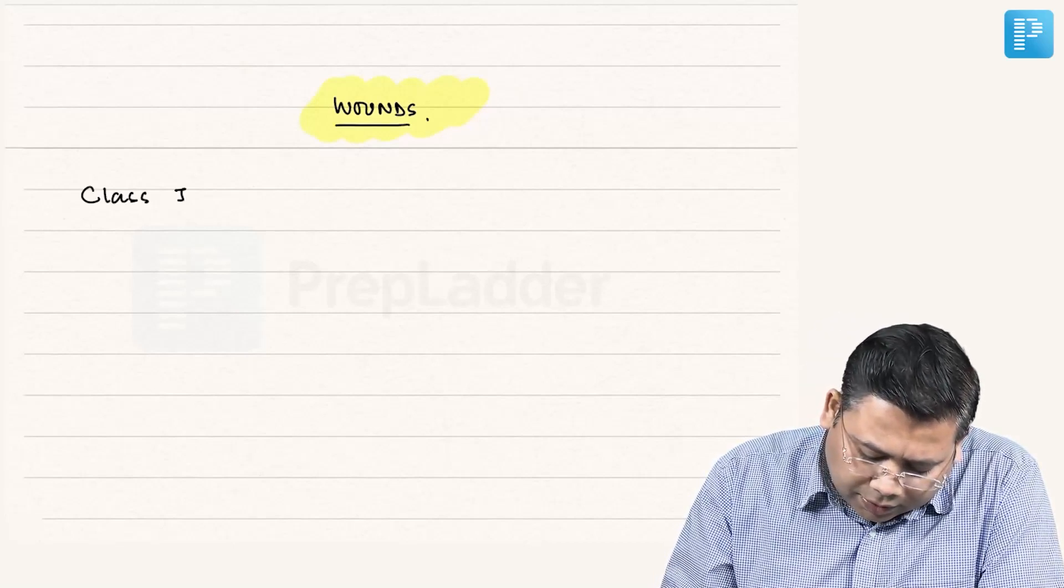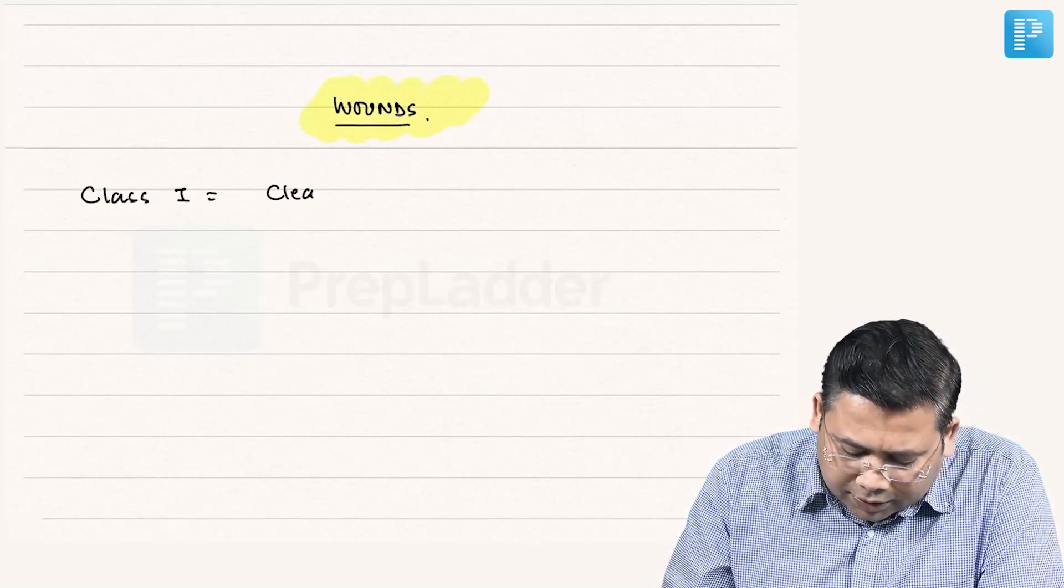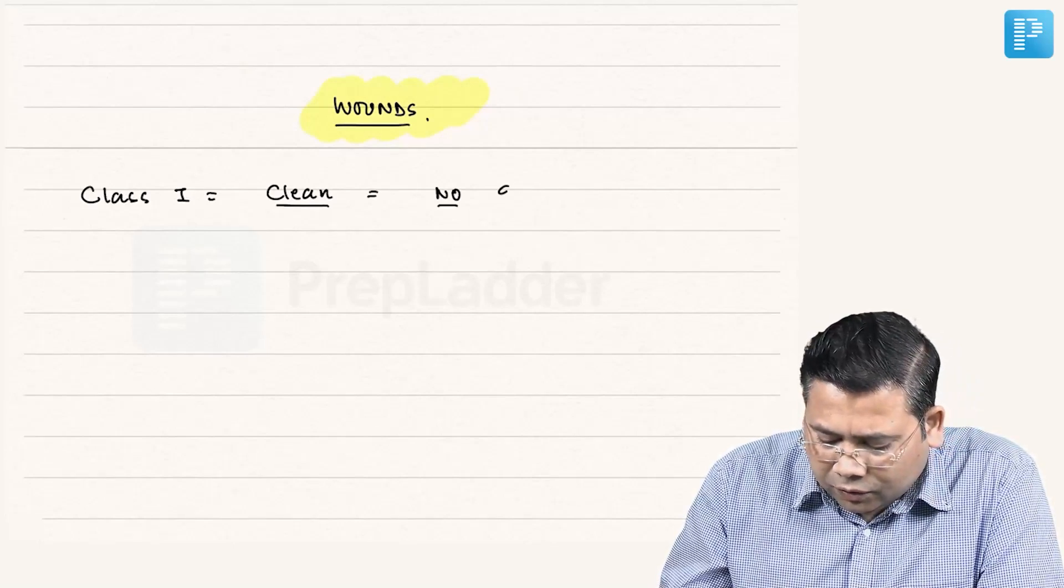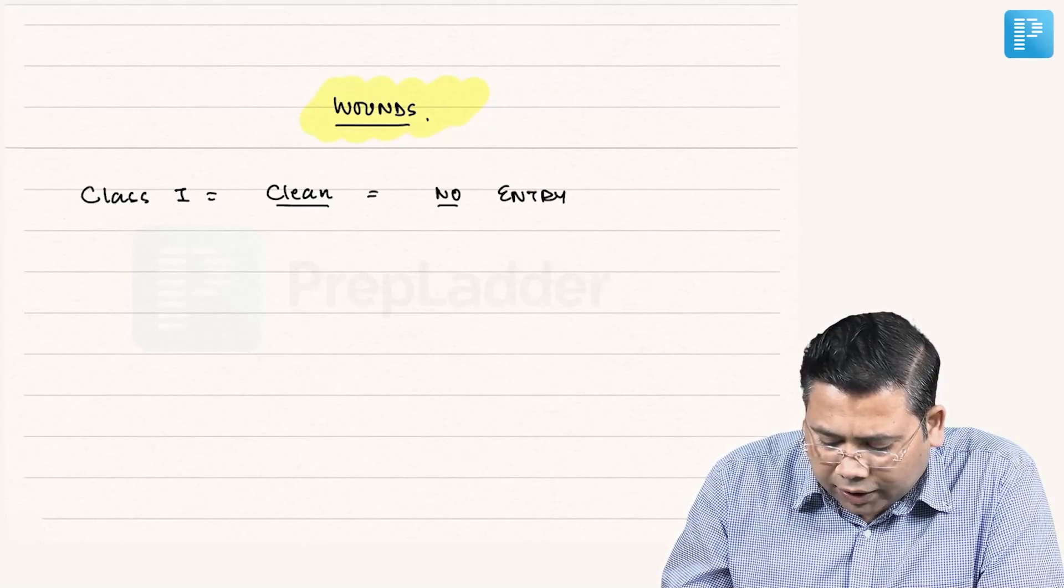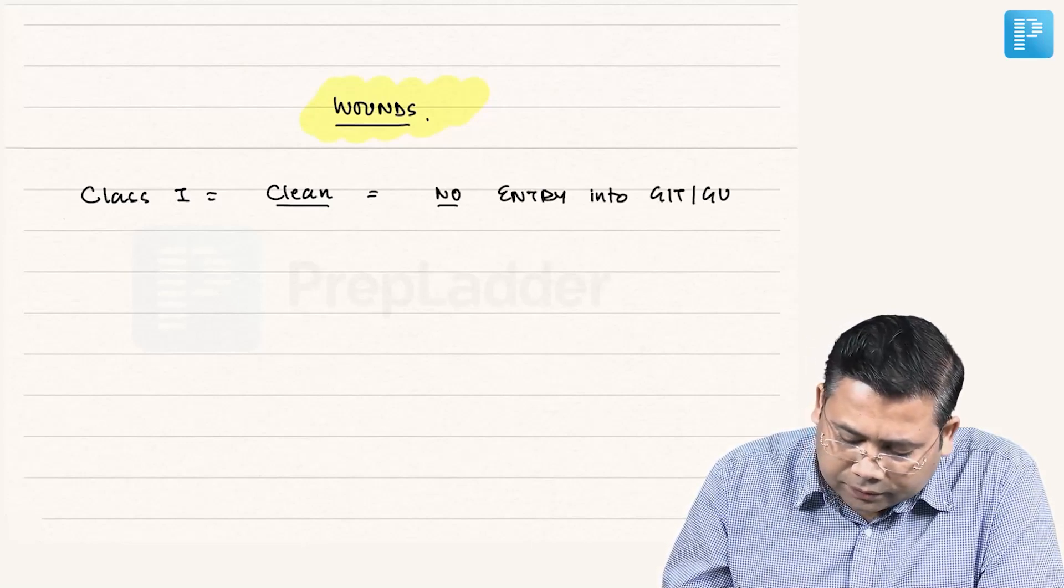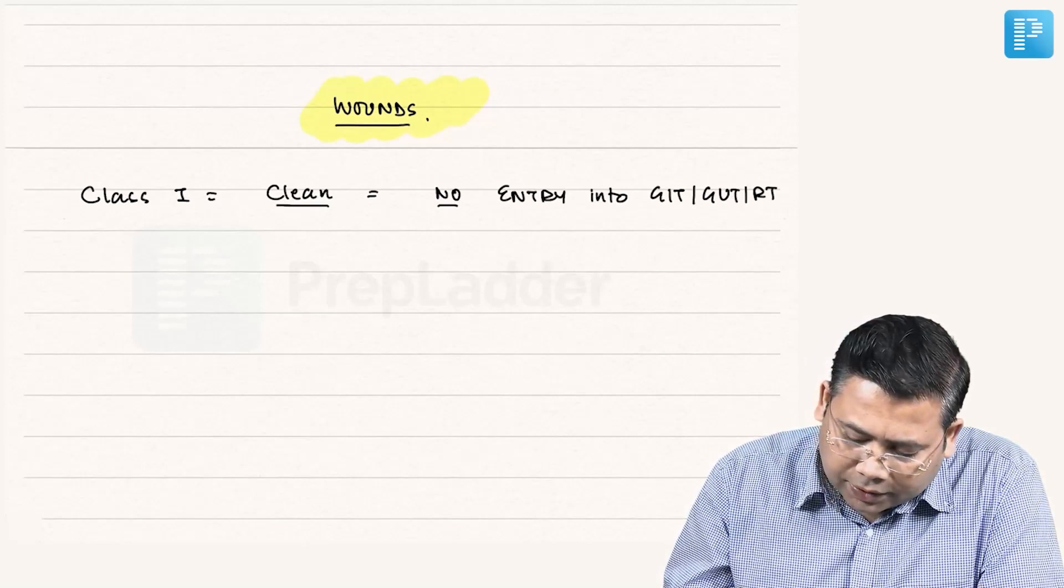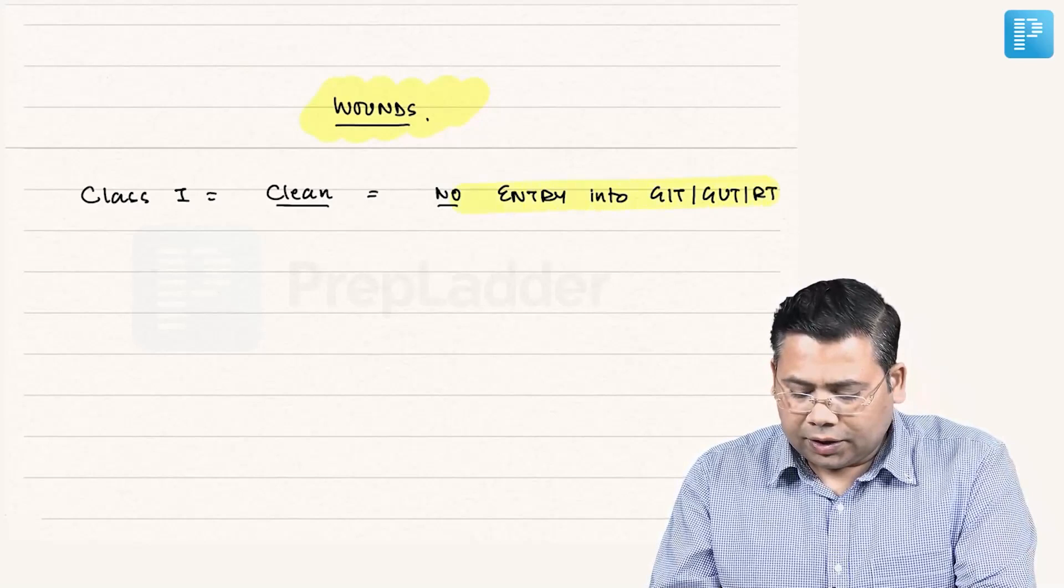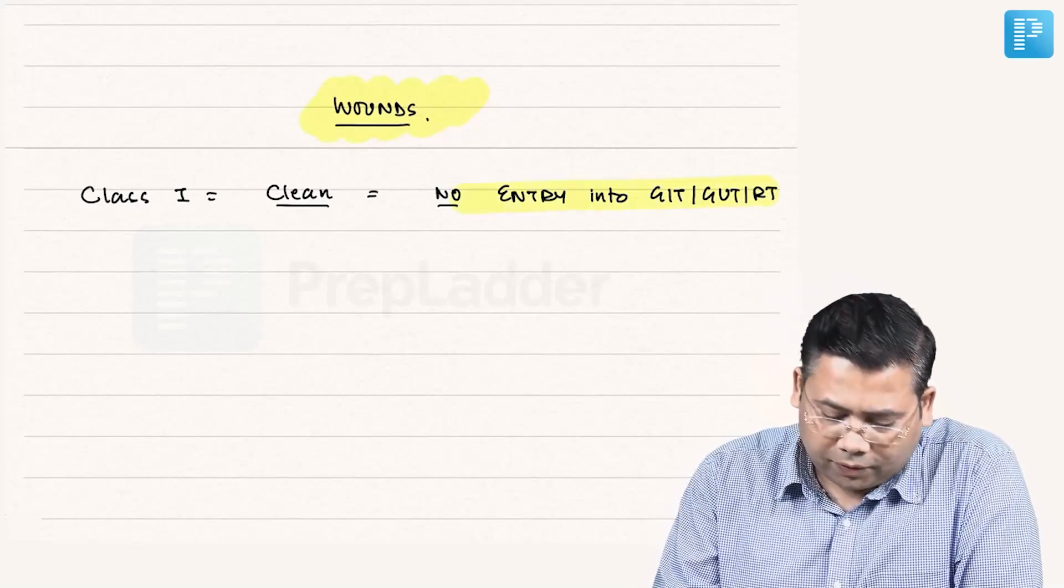When we talk about the wounds, one very important thing is Class 1, they are clean wounds. And what do you mean by clean? There is no entry into GIT, GUT and respiratory tract. Point number 1.